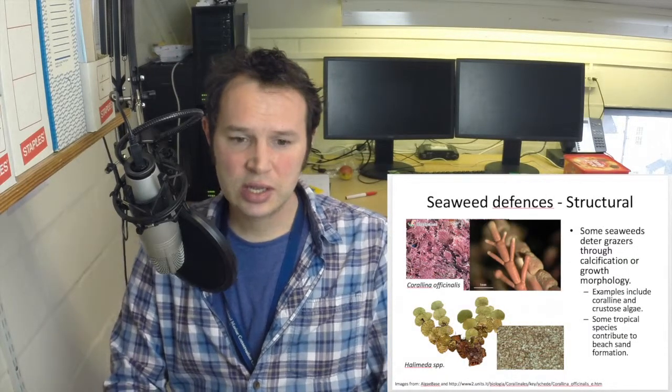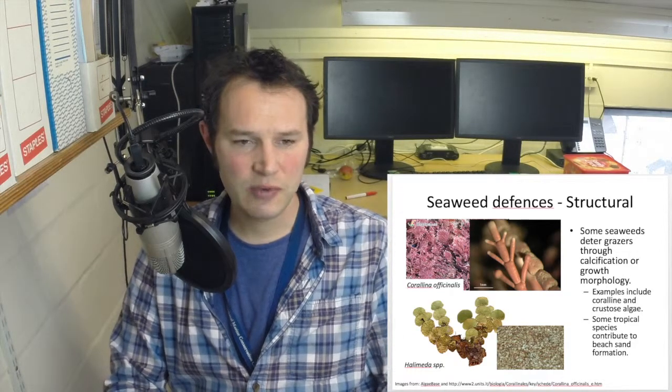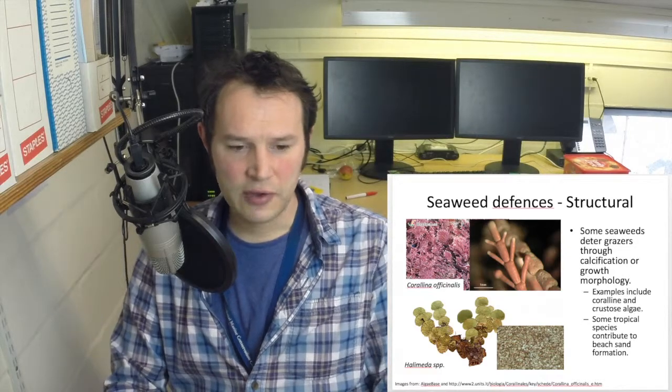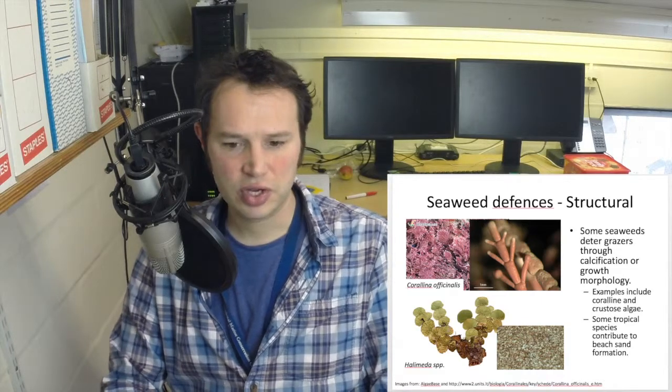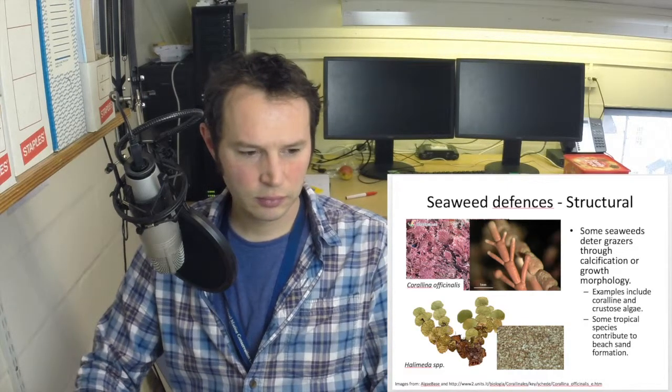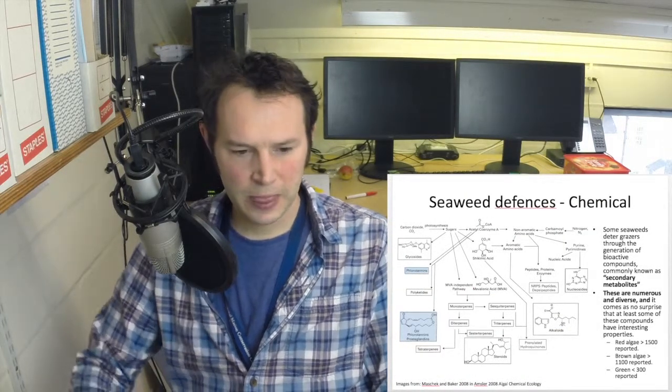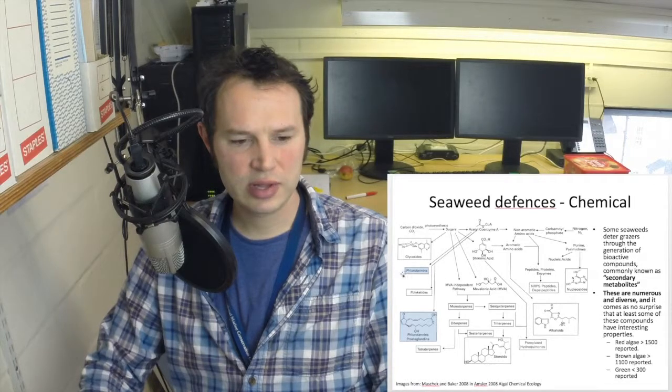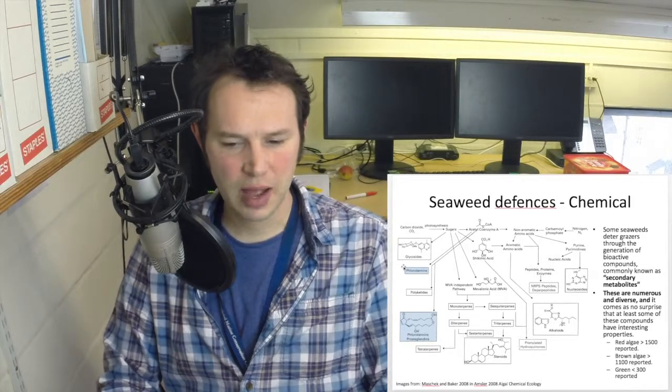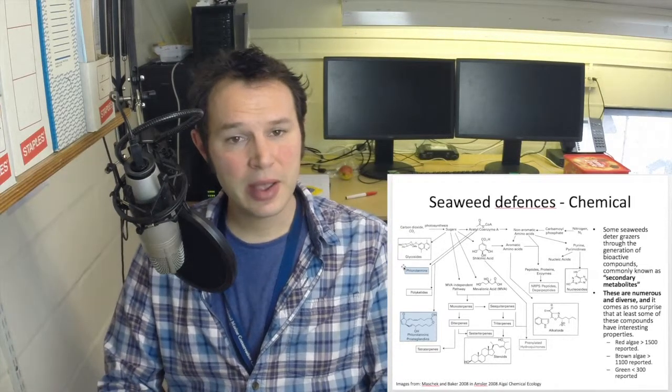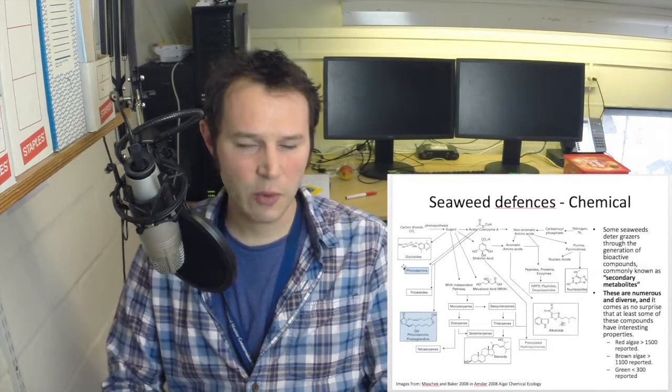Some species develop structural defenses such as the formation of calcium carbonate within their cells. For example, Corallina officinalis or Halimeda species utilize that calcium carbonate within their structures to deter grazing. Others utilize chemical defenses and here we are particularly looking at phlorotannins. Phlorotannins are secondary metabolites that are produced by several species of algae. There may be other defensive chemicals other than phlorotannins depending on the alga species that we are looking at.